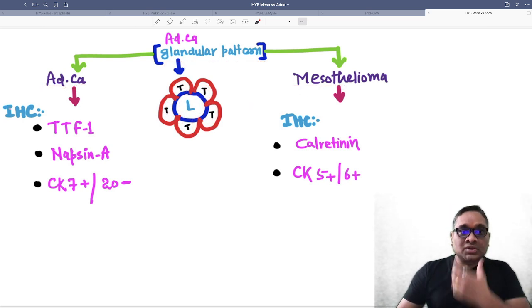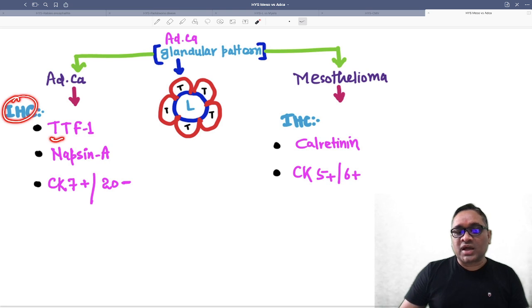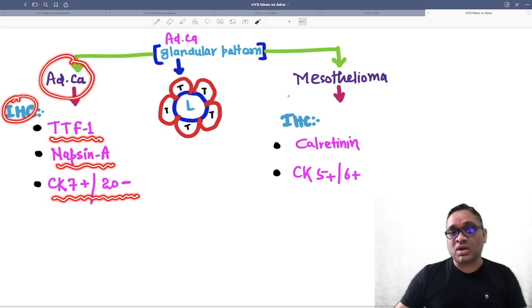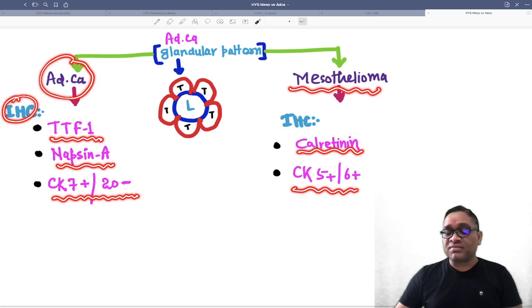So how to differentiate? IHC staining can help us. Thyroid transcription factor 1, napsin A, cytokeratin 7 positive and 20 minus are in favor of adenocarcinoma, whereas mesothelioma will be positive for calretinin and cytokeratin 5 and 6.